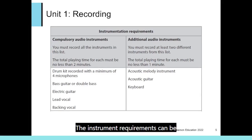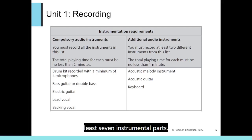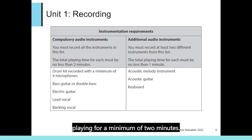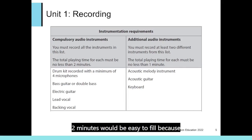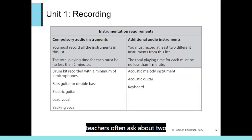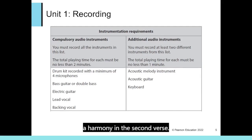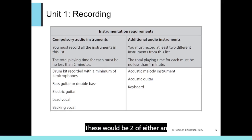The instrument requirements can be seen in the table. There must be at least seven instrumental parts. The compulsory instruments — drums, bass, electric guitar, lead vocal and backing vocal — must all be included, playing for a minimum of two minutes. Two minutes of backing vocals could be achieved with harmony in the choruses and possibly a harmony in the second verse. Two further instruments must be recorded for at least one minute — these would be two of either an acoustic melody instrument, an acoustic guitar, or a keyboard.